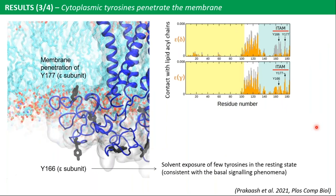Another important aspect is membrane penetration of cytoplasmic tyrosines. Experiments with small peptides containing tyrosines showed that tyrosines do penetrate into the hydrophobic core of the membrane, but it remained unclear whether all tyrosines do this when the whole TCR complex is intact. We found that some tyrosines did penetrate the membrane, consistent with experimental results, while a few transiently exposed themselves to the solvent — consistent with basal signaling phenomena, meaning the TCR signals at a minimal level even in its resting state.